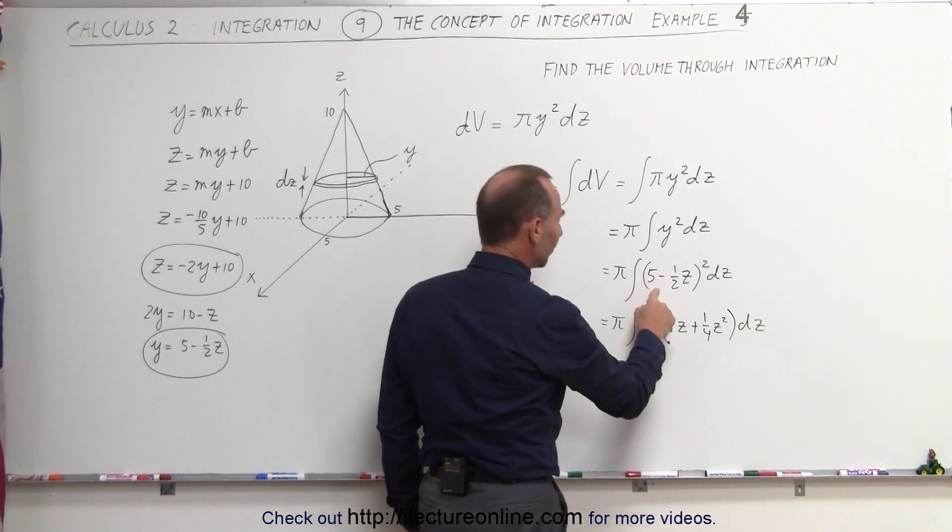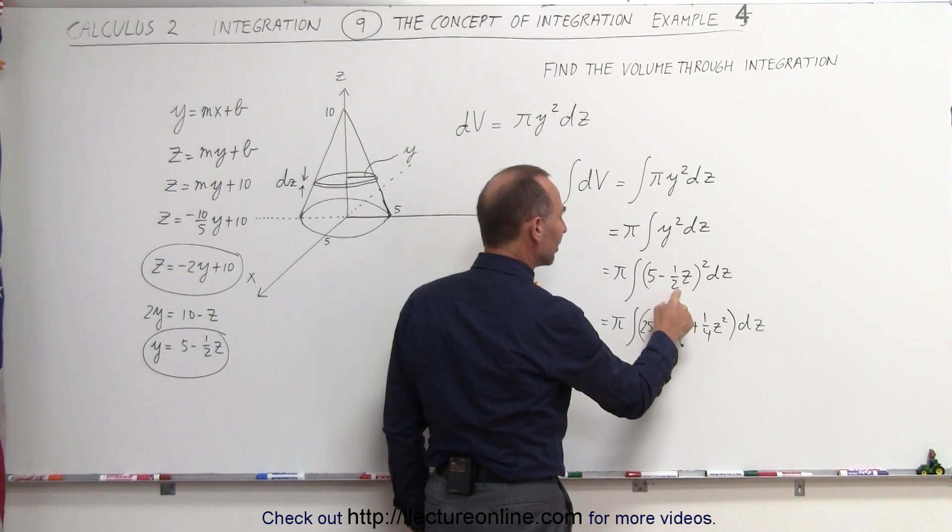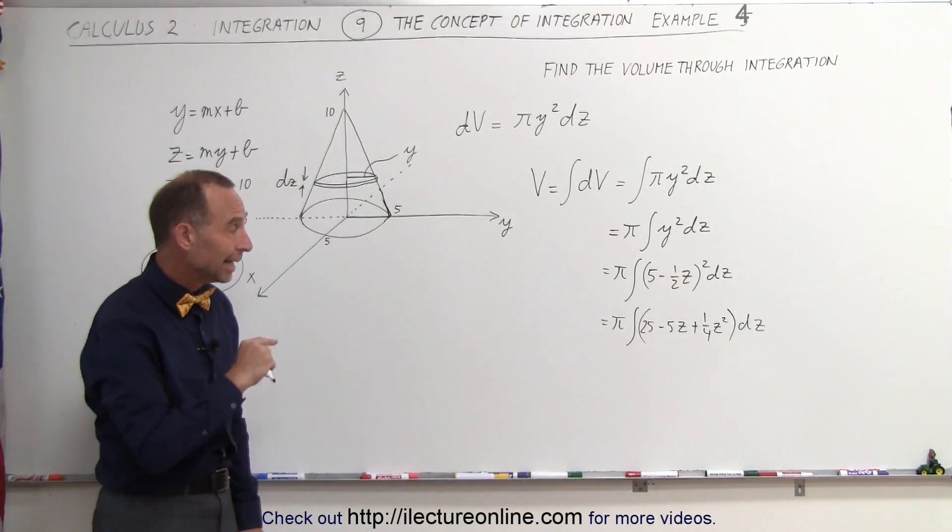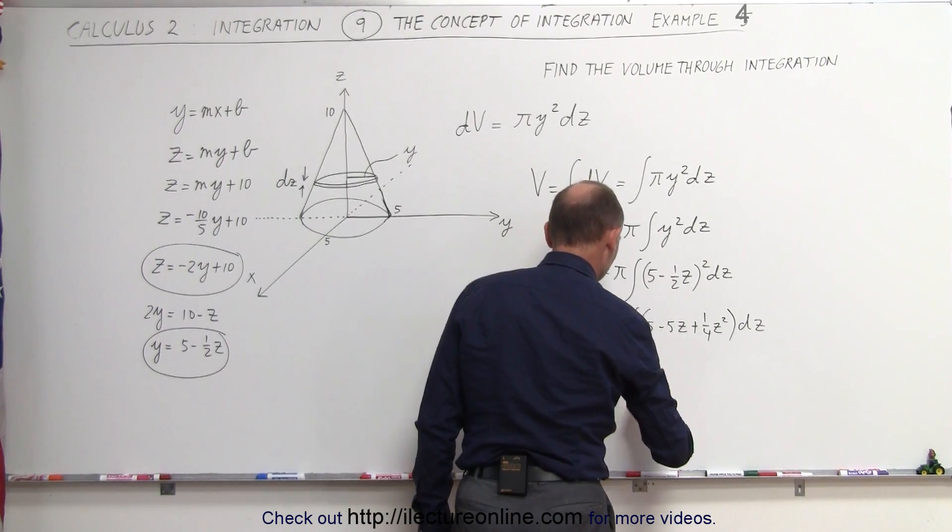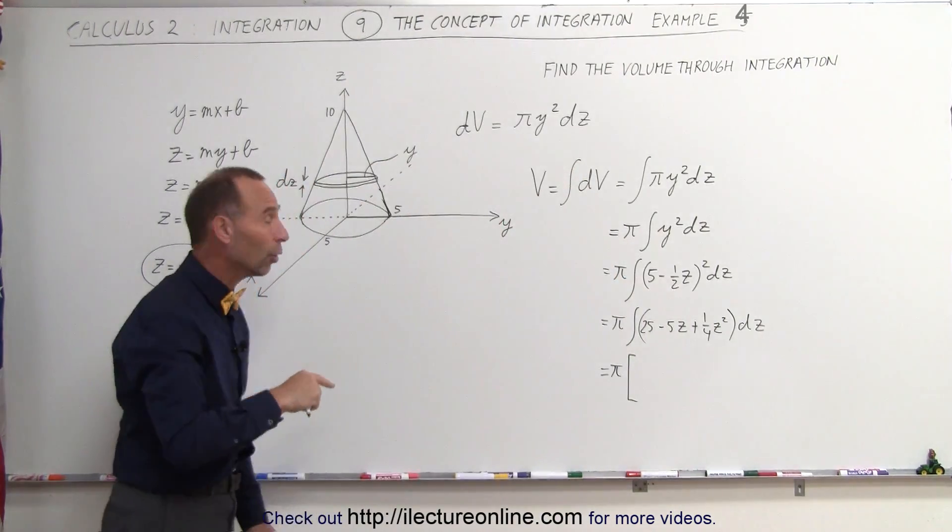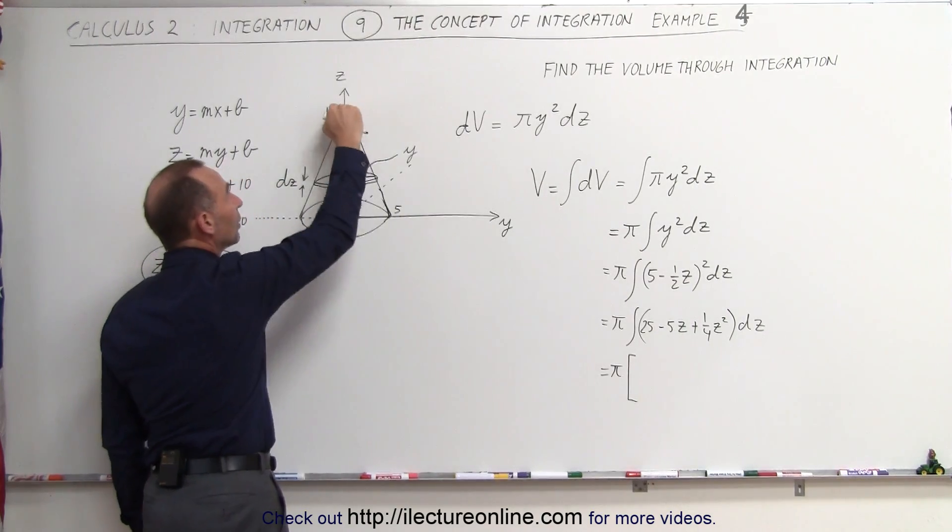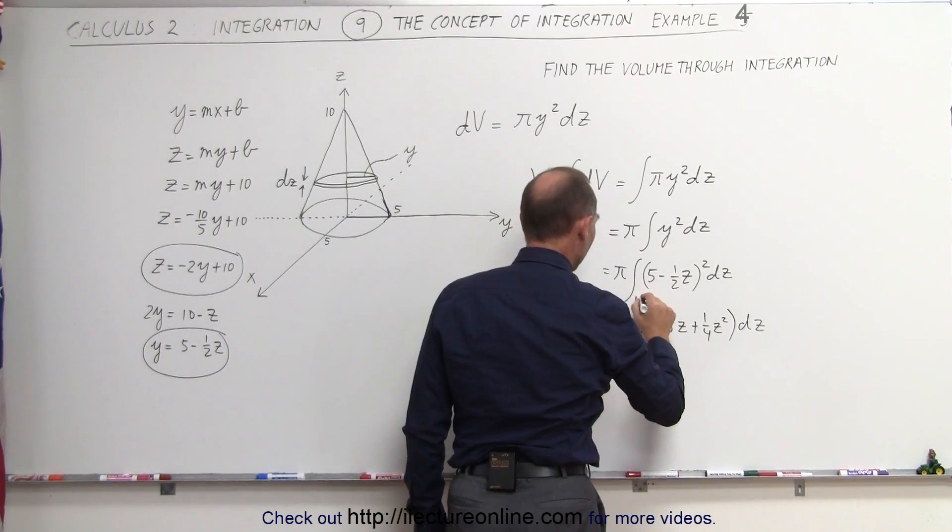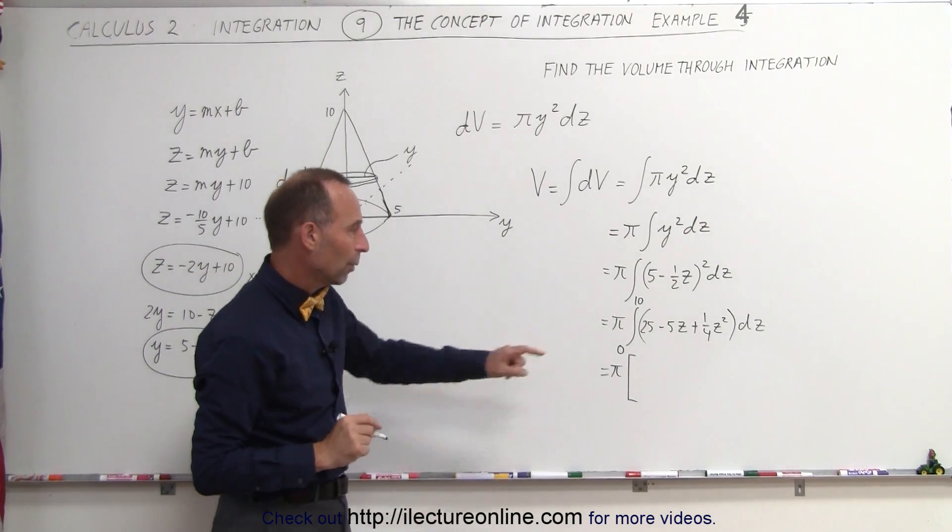Quick check, we have 25, we have 1 quarter z squared. 5 times this is 5 half z times 2 is 5z, and it's negative. Alright, now we can go ahead and integrate that. This is equal to π times... and what are the limits of integration? Since we're integrating over the variable z, the cone goes from z equal to 0 to z equals 10. So our limits are going to be z equals 0 to z equals 10, and we'll plug that in at the end.